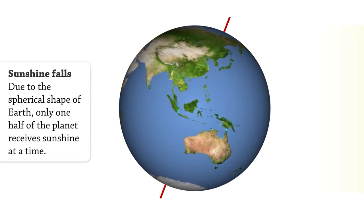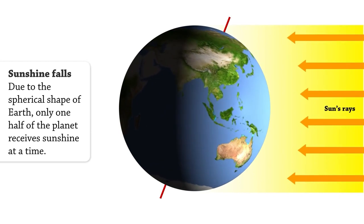Due to the spherical shape of Earth, only one half of the planet receives sunshine at a time.